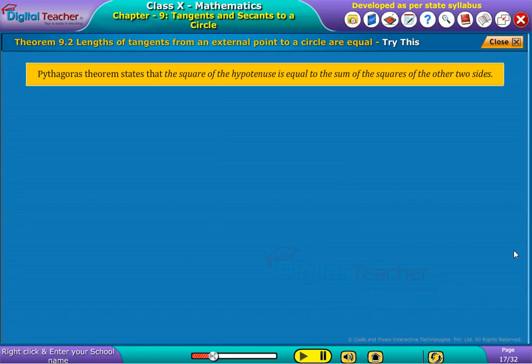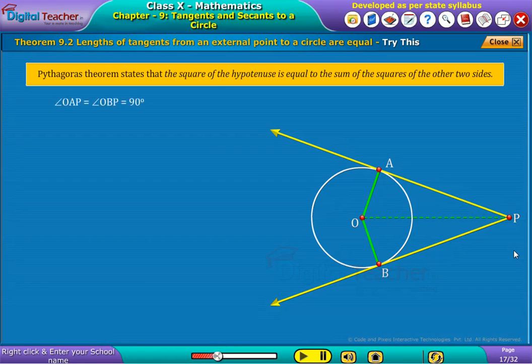From the figure, we already know that angle OAP is equal to angle OBP is equal to 90 degrees. Then, in triangle OAP and triangle OBP,